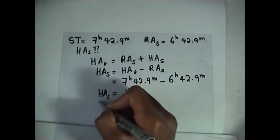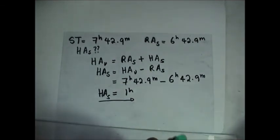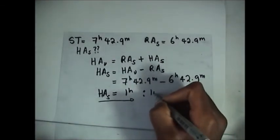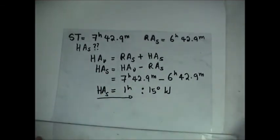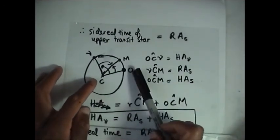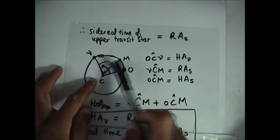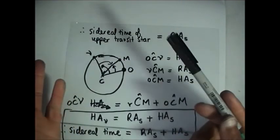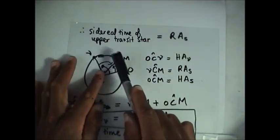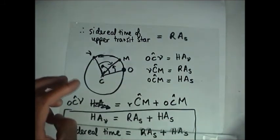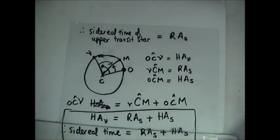This gives us 1 hour. So the hour angle of S is 1 hour, which converts to 15 degrees west — it's 15 degrees towards the west side, because hour angle is measured towards the west. So in that situation, OCM is now 15 degrees, OCV is 7 hours 42 minutes, and VCM is 6 hours 42.9 minutes. The star is 15 degrees west of the celestial meridian.